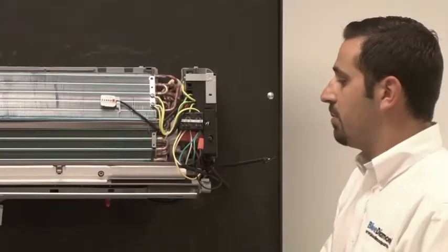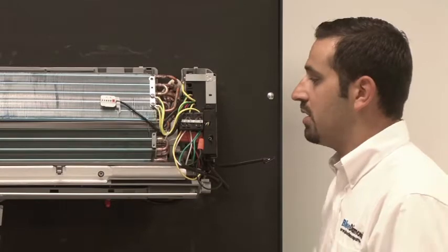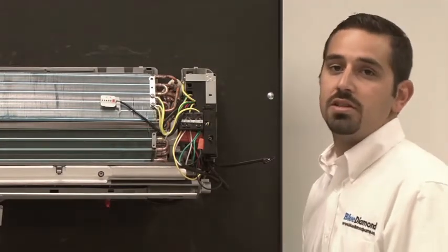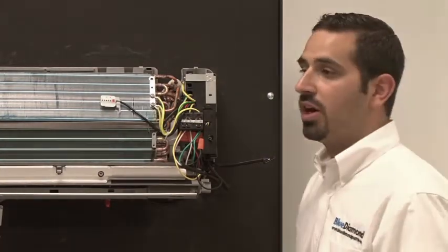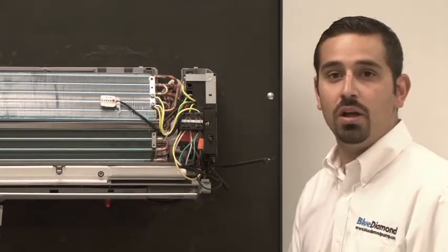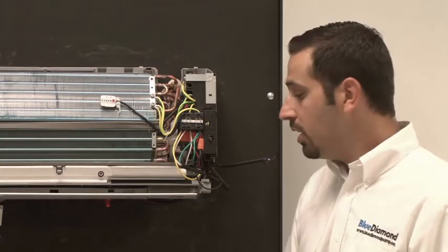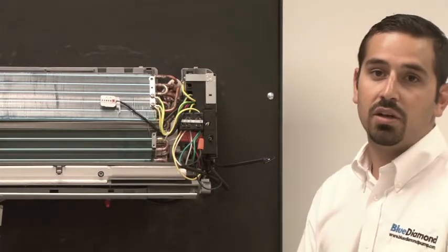All right now that the wiring is complete we just want to make sure that everyone understands that we are not running L2 or S through the pump. The only thing we will break with the Blue Diamond pumps is your L1. L1 will run through the pump, use our normally closed contact to bring the voltage back to your air handler.